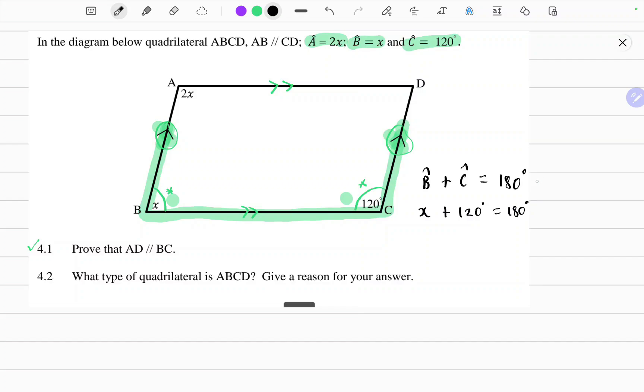Very important to always include the reason. This is co-interior angles. So therefore, x should be equals to 60 degrees.